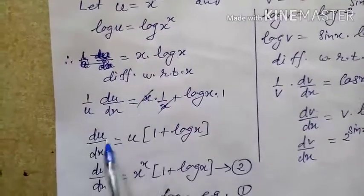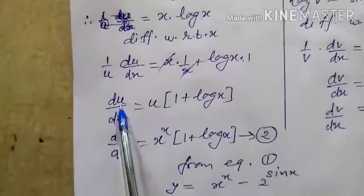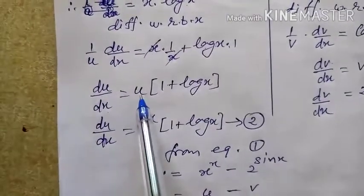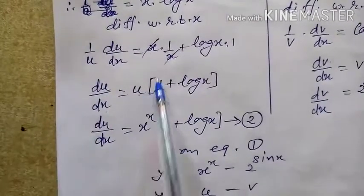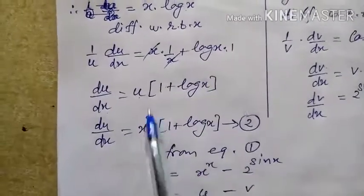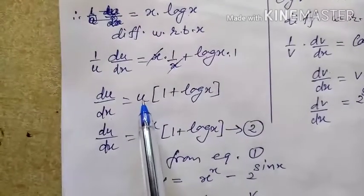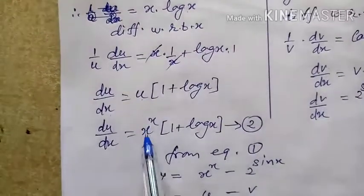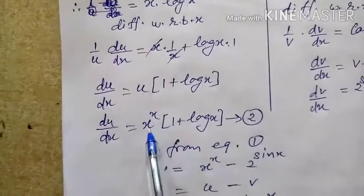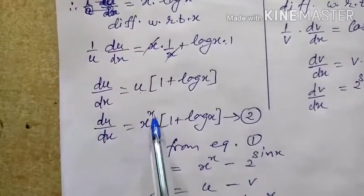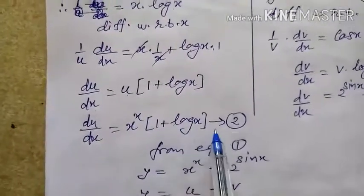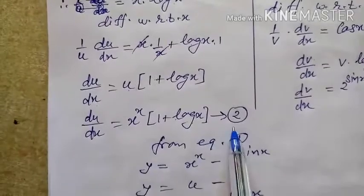Now transfer u to the right side. So du/dx = u · (1 + log x). In the last step, in place of u write x^x. So du/dx = x^x · (1 + log x). Give this equation number 2.